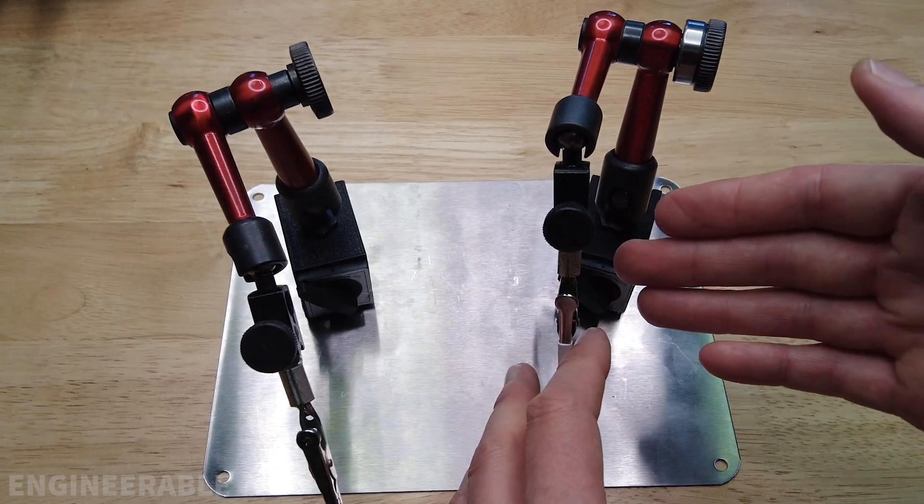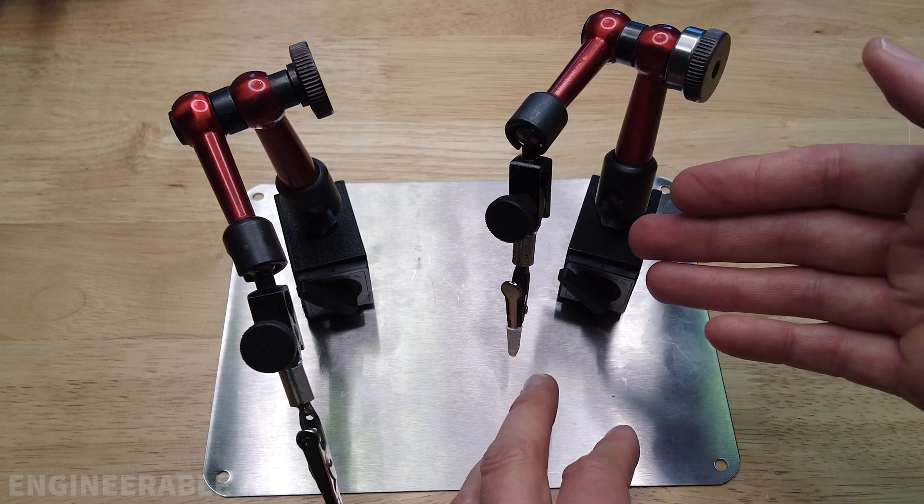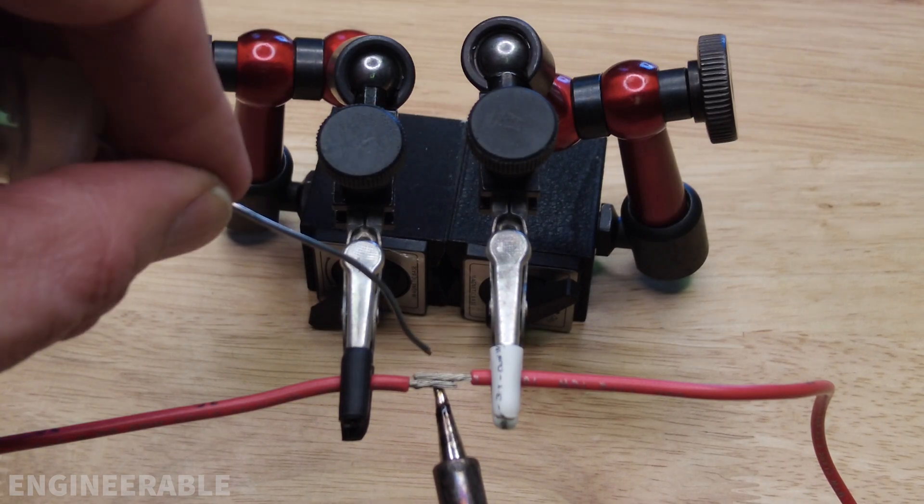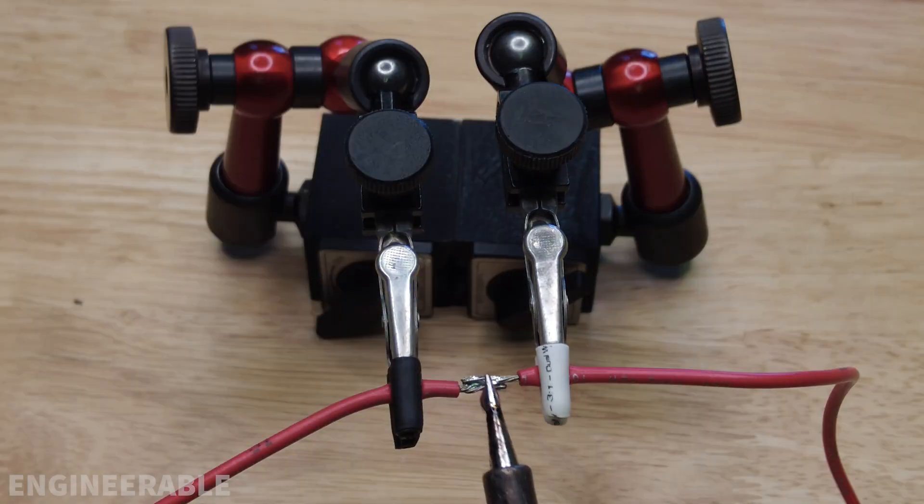These arms are super inexpensive at about $18 a piece, so they're great little arms for using for things other than just dial indicators, like in this case using them for helping hands for soldering and electrical work.